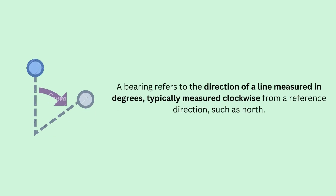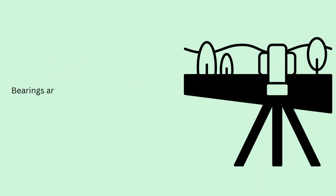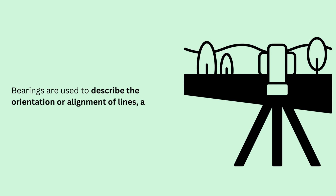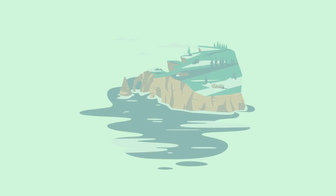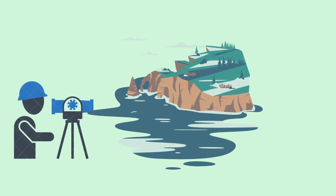In surveying, a bearing refers to the direction of a line measured in degrees, typically measured clockwise from a reference direction such as north. Bearings are used to describe the orientation or alignment of lines, angles, or points in surveying. Bearings provide a standardized and precise method for describing directions in surveying, allowing surveyors to establish accurate measurements, alignments, and boundaries essential for various surveying applications.